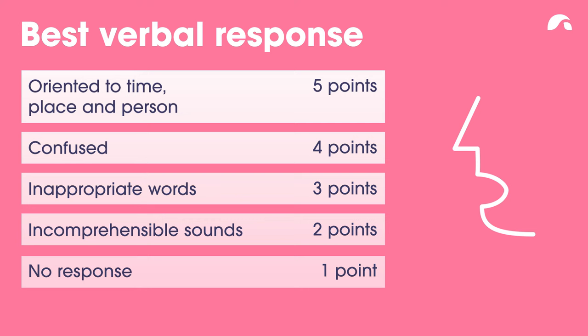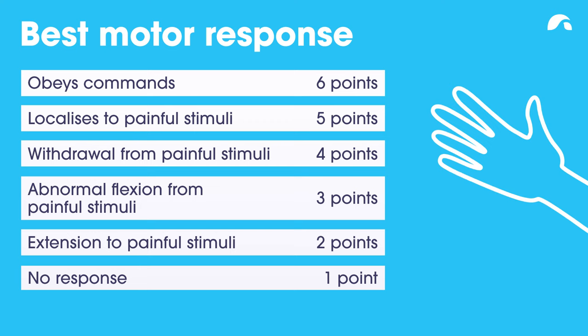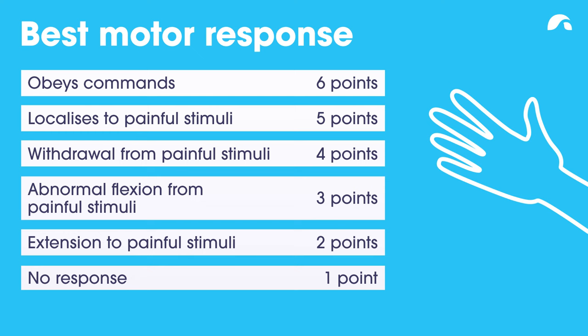Motor response. Are they able to follow a command? Six points. Do they localise to a spot when a painful stimulus is applied? Five points. Do they withdraw from the painful stimulus? Four points. Does the person react with an abnormal flexion? Three points. Does the person respond with an abnormal extension? Two points. Do they have no response to painful stimuli? One point.